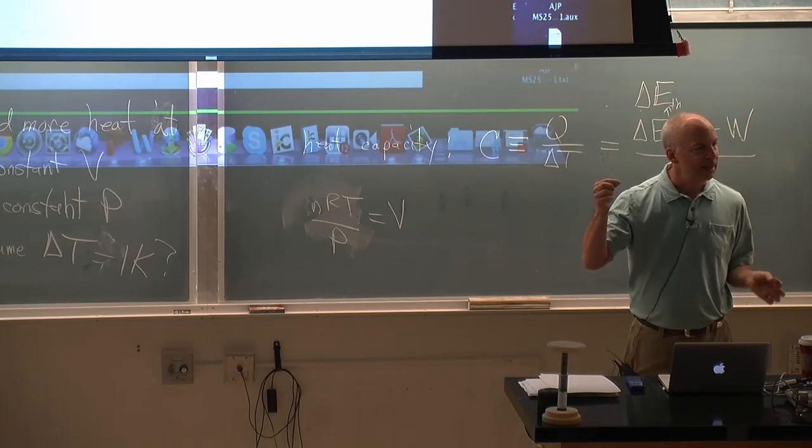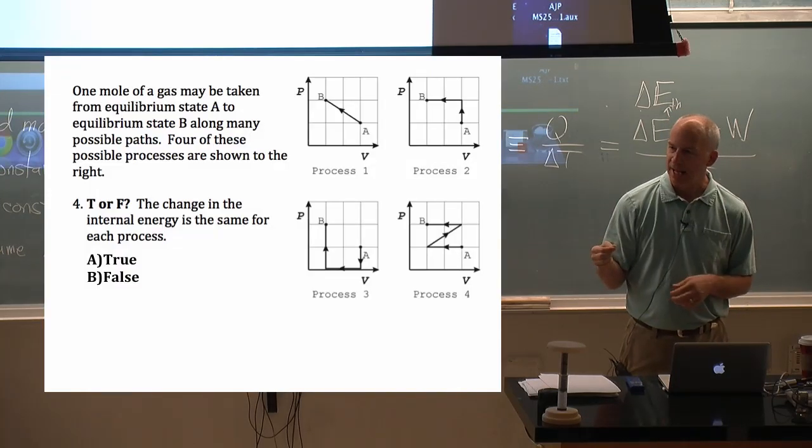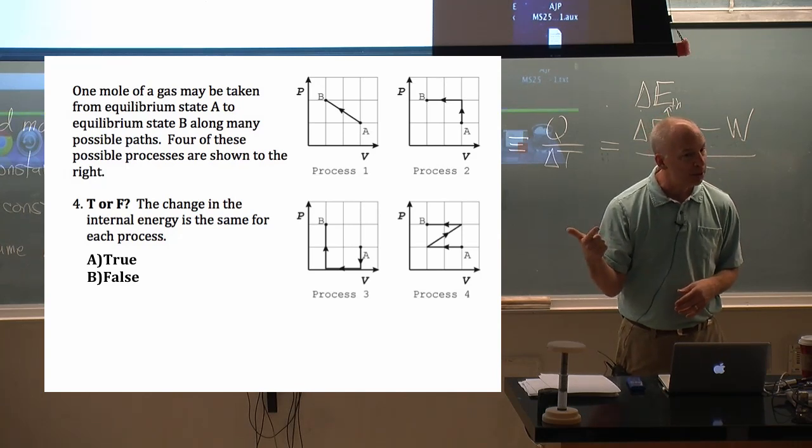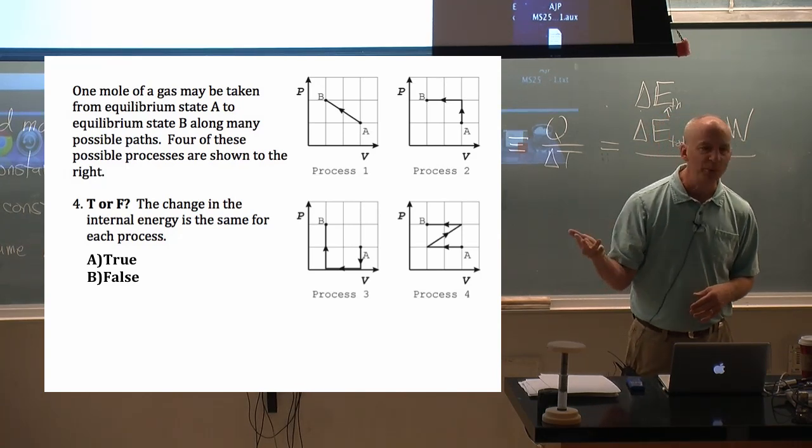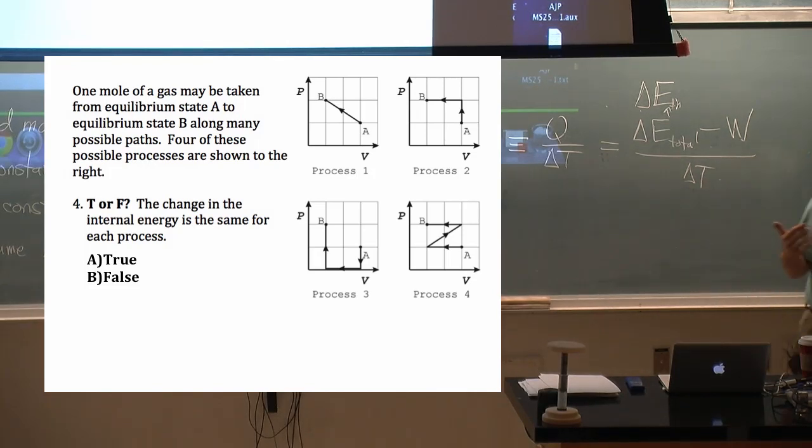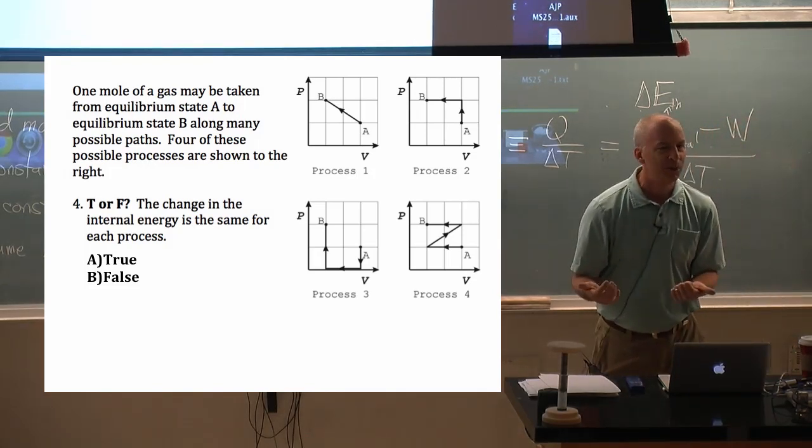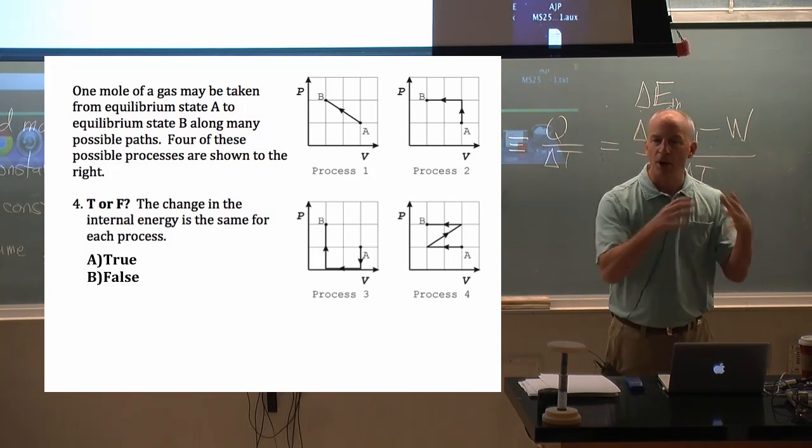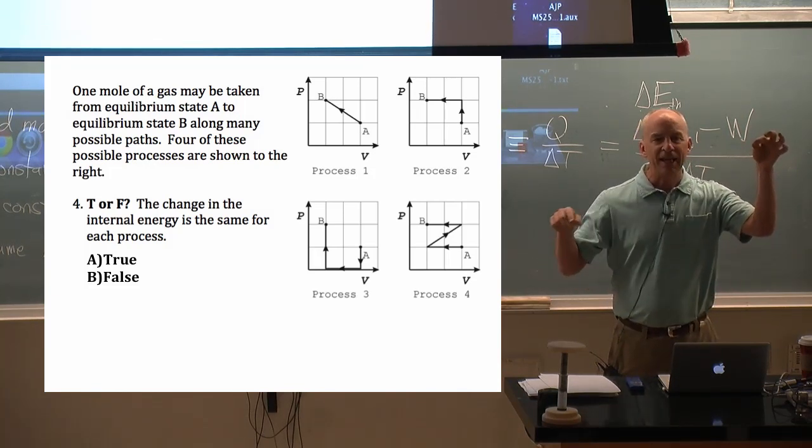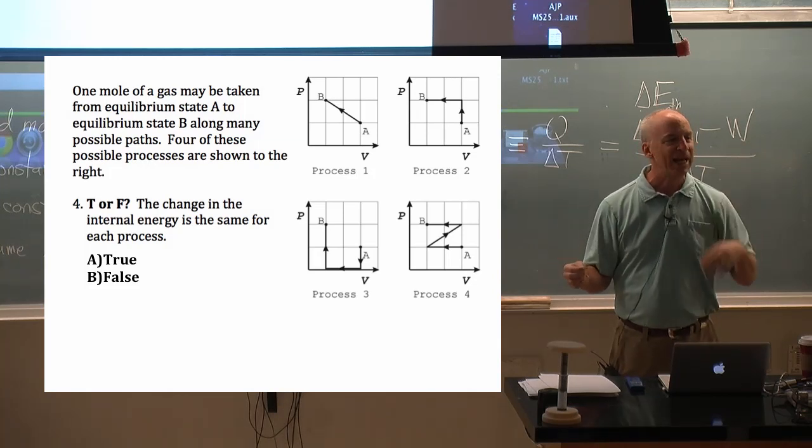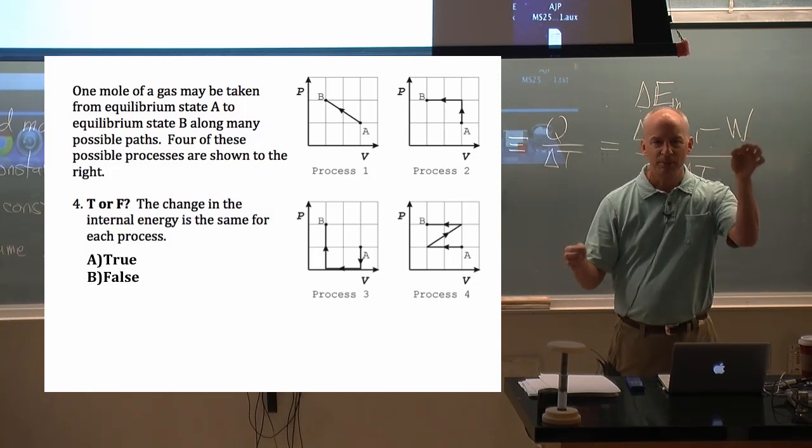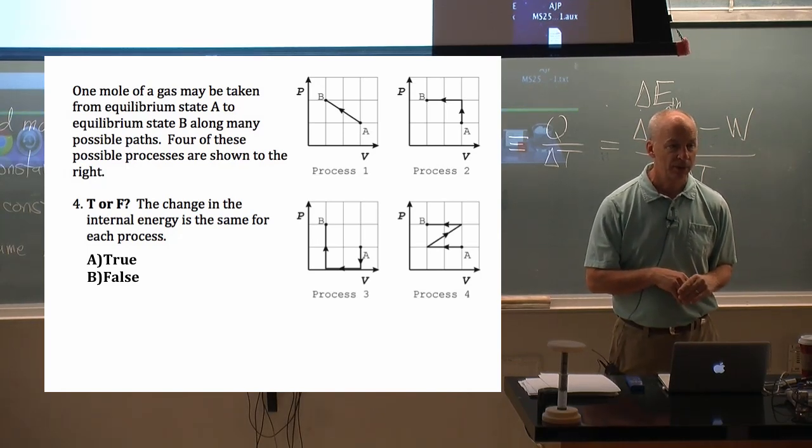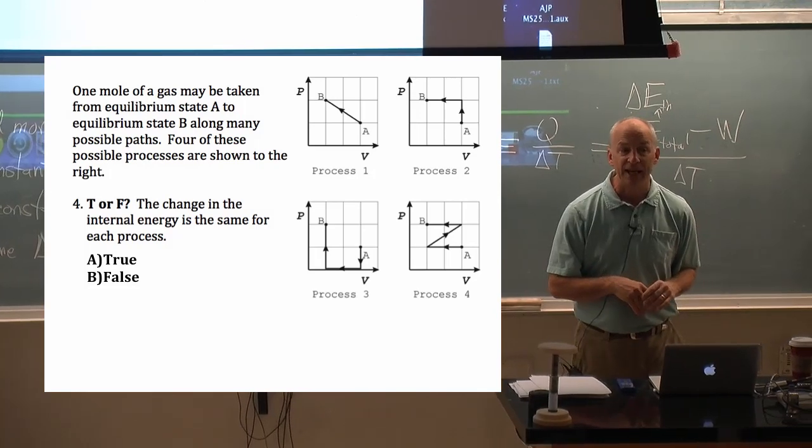But in the end the state of the system at A has a certain internal energy. It's got a temperature. It's got a pressure. It's got a volume. It's got a number of particles. It's got an entropy. It's got an enthalpy. All those state variables are known at point A and they're all known at point B. And you can get from A to B a lot of different ways. But the internal energy is the same at the end of all those paths. And it's the same at the beginning of all those paths.